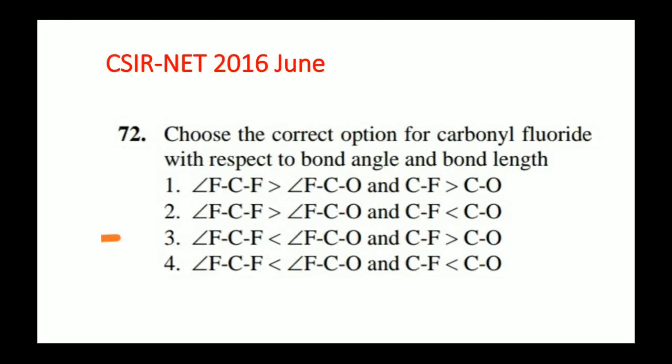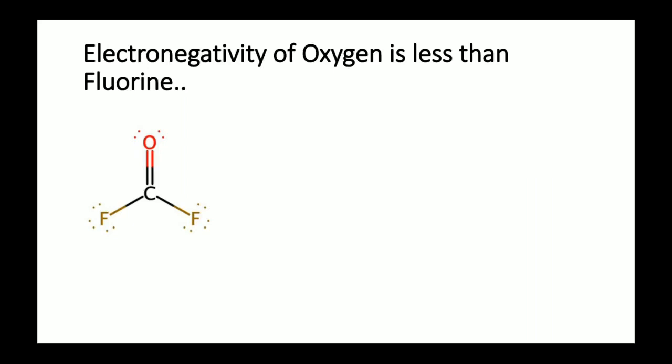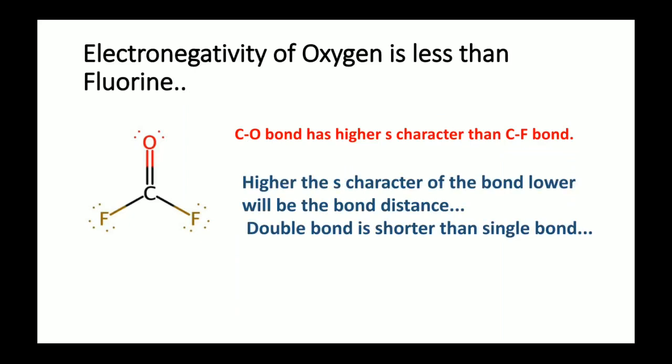The next question came in June 2016 for 4 marks. A carbon fluoride compound CF₂O is given, and we must compare bond angles F–C–F and F–C–O, and compare bond lengths of C–F and C=O. The electronegativity of oxygen is less than fluorine, so the C=O bond has higher S character than the C–F bond. Higher S character means stronger bond and smaller bond length. Therefore, C=O will have lesser bond length than C–F. Additionally, the C=O double bond is always shorter than the C–F single bond, so the order is: C–F > C=O in bond length.